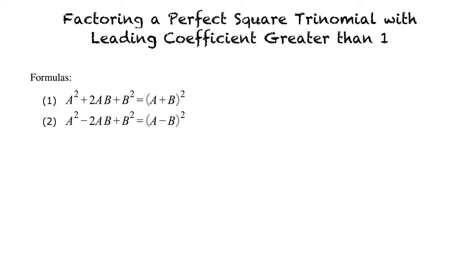Let's take a look at the following example: Factor 25x squared minus 20x plus 4. Would we use formula 2 for this problem? Yes, formula 2 deals with a negative sign for the second term of the equation. As we can see in our formula, we have to find the square root of our first term and the square root of our third term, and subtract the third from the first.